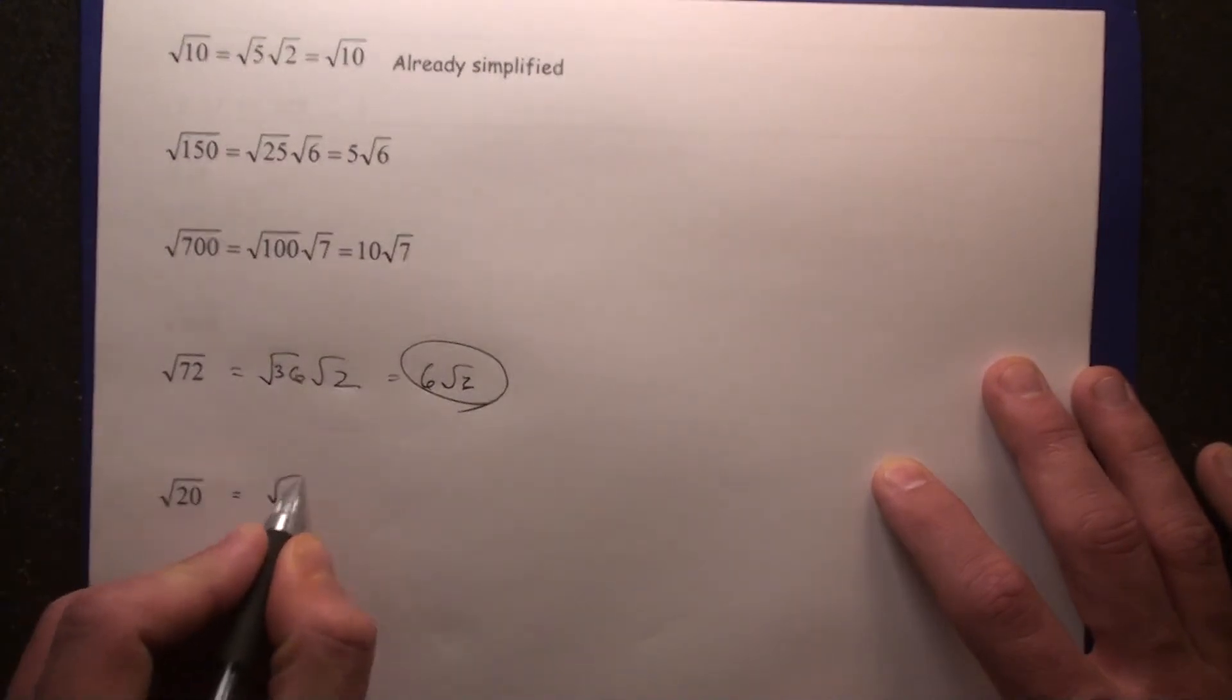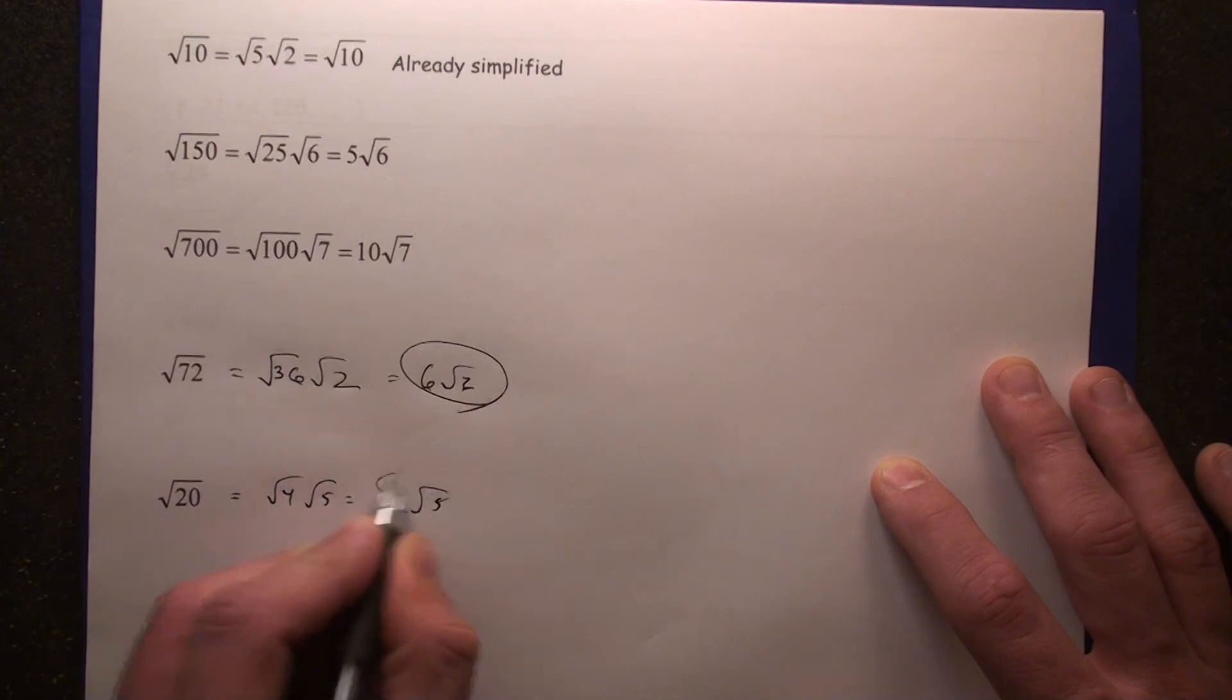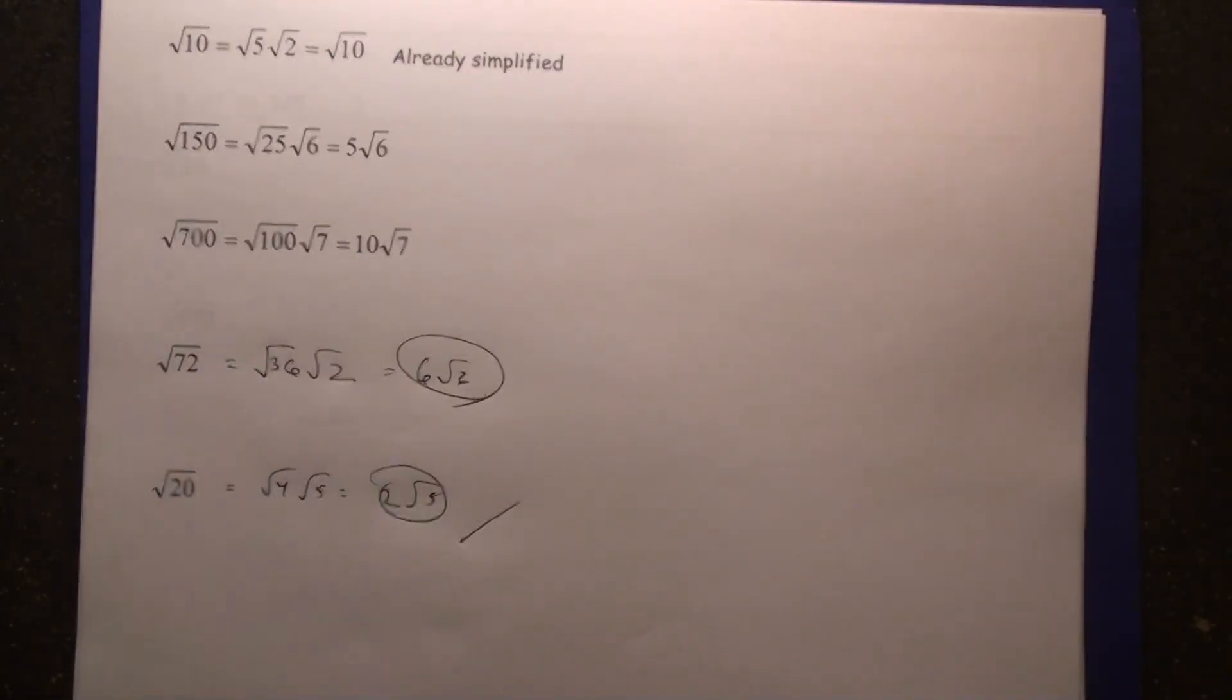Root 20, you're going to use root 4, root 5, which gives you 2 root 5, and we're all set. This is part 1 of the video. Please come back and join us for part 2. Thank you.